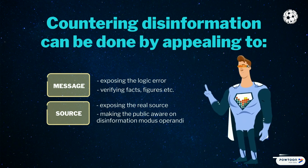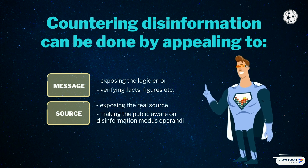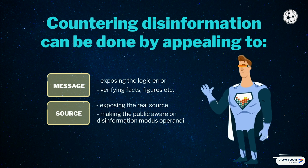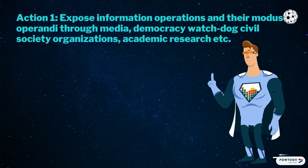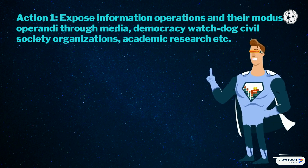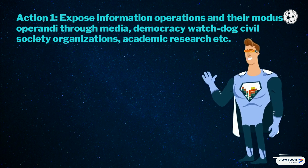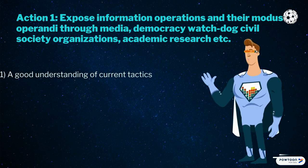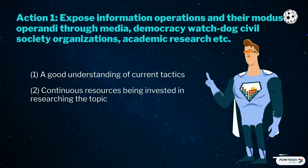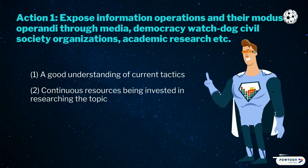Identifying and exposing hostile information influencing may need more than the intervention of professional state institutions and NGOs dedicated to exposing falsified content. In order to identify and expose hostile information influencing, we need to take into consideration an entire array of actions. Action 1: Expose information operations and their modus operandi through media, democracy watchdog civil society organizations, academic research, etc. There is the obvious solution of exposing hostile information operations' current modus operandi and keeping a close eye on any new developments so that the public can be timely made aware of their existence.